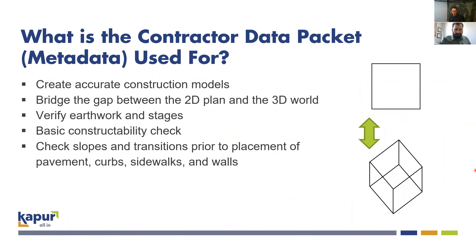What is the data packet used for? It's the metadata — it's to create an accurate construction model. You can use it to bridge the gap between the 2D plan and the 3D world. Verify earthwork and stages, making sure there are no gaps or over-counting of areas, like Dean talked about. It's a basic constructability check: do things line up? Are there areas that don't match into the existing ground? Do the stages shown in one part of the plan match the earthwork table? You can use it to check slopes and transitions prior to placement of pavement, curb, sidewalks, and walls — for example, verifying that grades and slopes in the pavement grades match across sections.